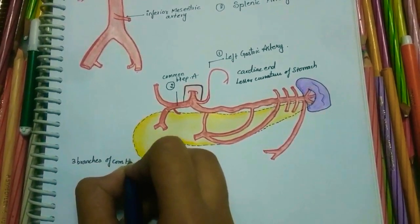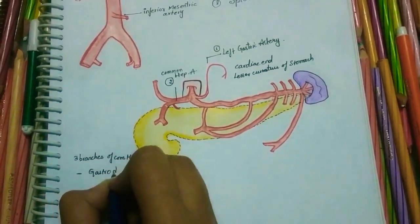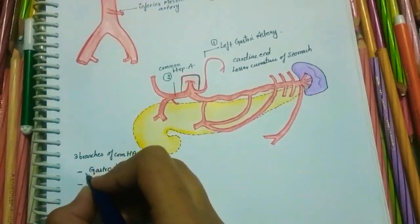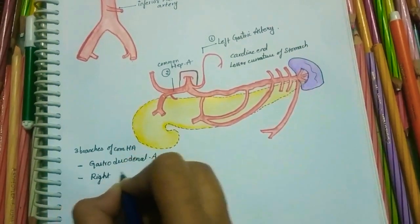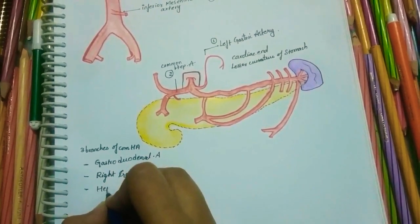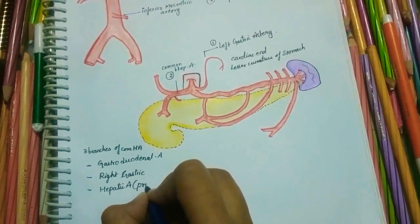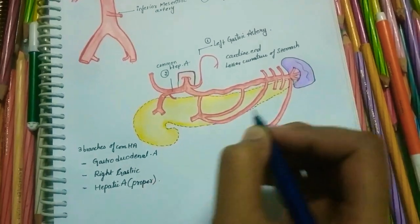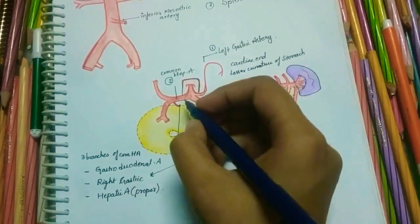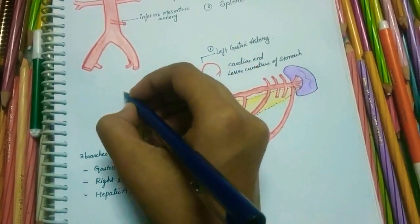The three branches of the common hepatic artery are: the first branch is the gastroduodenal artery, the second branch is the right gastric artery, and the third branch is the hepatic artery proper.